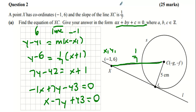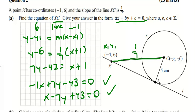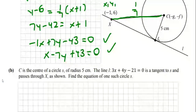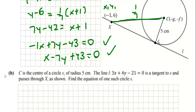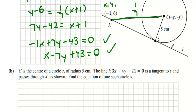Now, C is the center of the circle of radius five. The line 3x plus 4y minus 21 equals zero is a tangent to the circle and passes through X as shown. Find the equation of this circle.